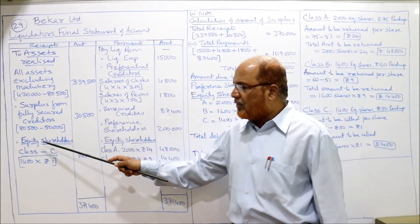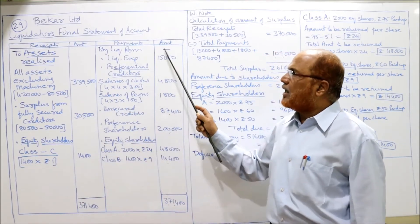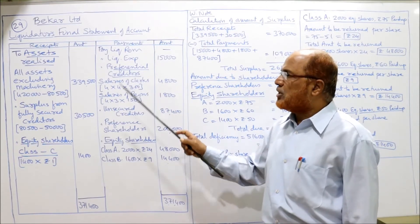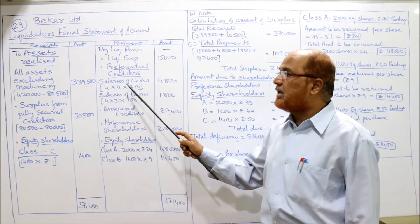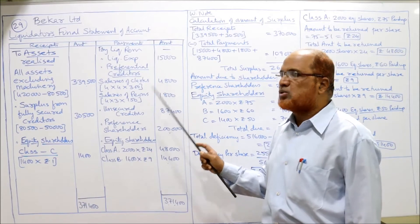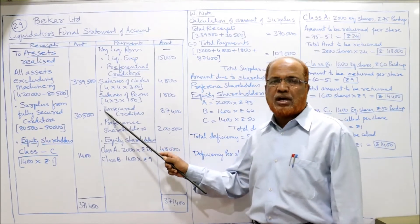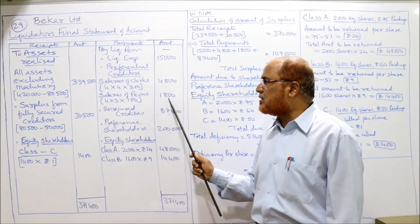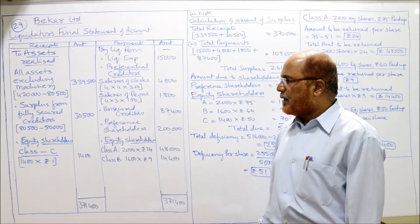Liquidator's remuneration is not given in the problem so put a dash. Liquidation expenses are directly given as 15,000. Preferential creditors: salary of four clerks for four months at 300 rupees per month = 4,800. Salary of four peons for three months at 150 rupees per month = 1,800. Unsecured creditors: 87,400 as directly given in the problem.